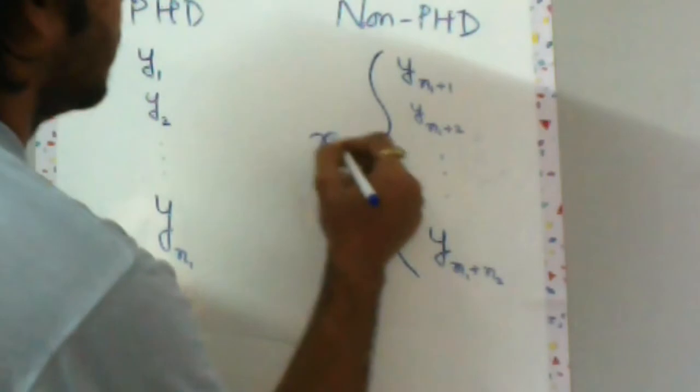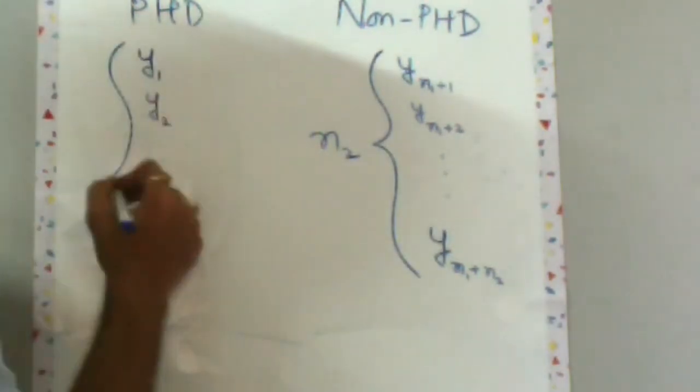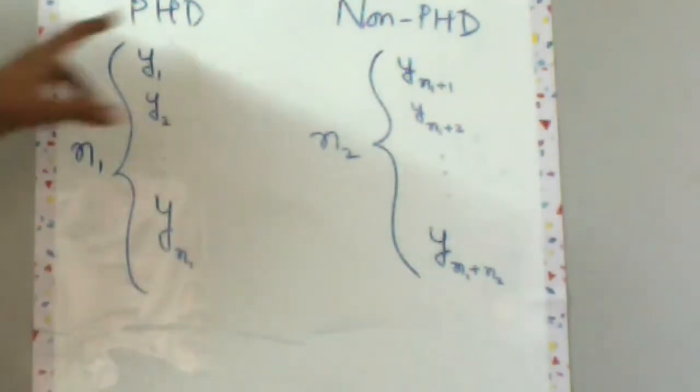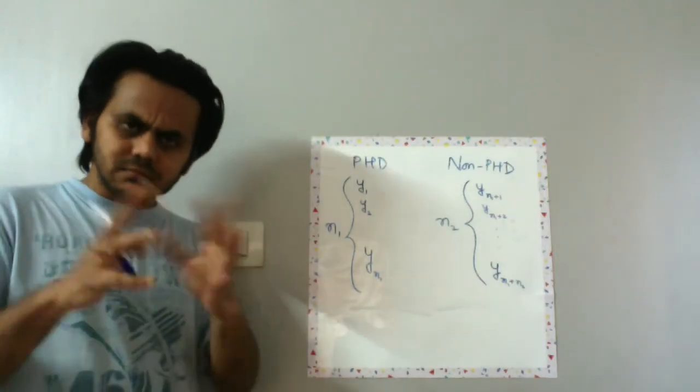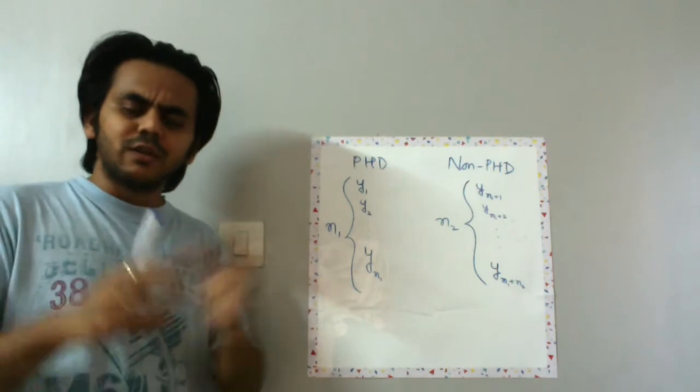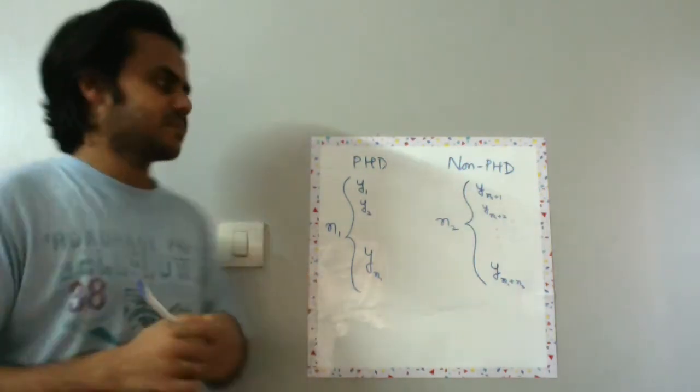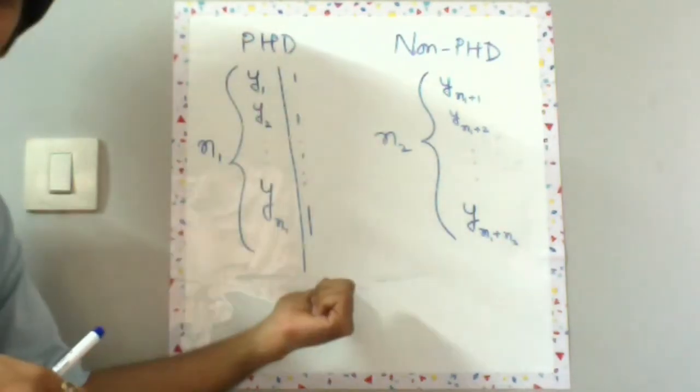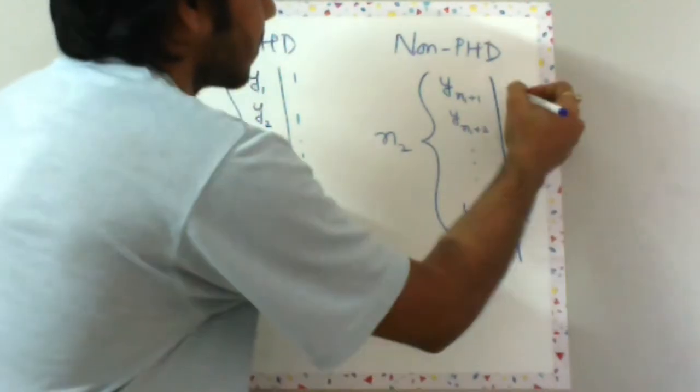So we have n2 non-PhD graduate salaries and we have n1 PhD graduate salaries. So can we construct some kind of a regression problem or econometric problem out of this? Yeah, we kind of have a solution to this.